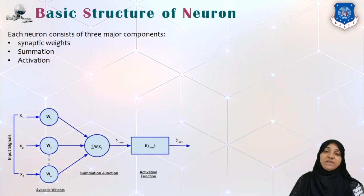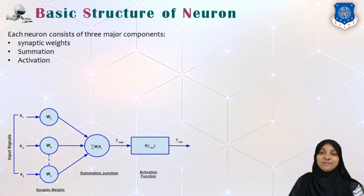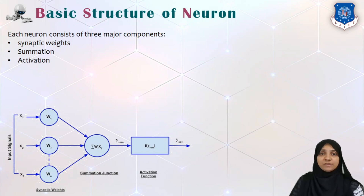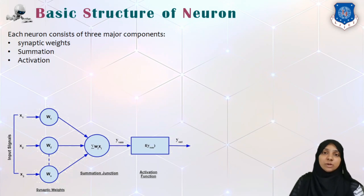A neural network is a basic network of neurons. What is the basic structure of a neuron, or how does a neuron look? A neuron is basically made up of three major components: first, synaptic weights; second, summation junction; and third, activation function.